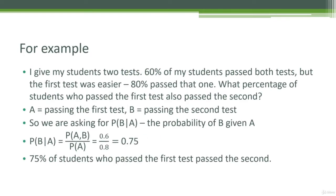Let's look at a real example. Say I give my students two tests and overall 60% of my students passed both tests. If we call the tests A and B, P(A,B) would be 60%. However, the first test was easier — 80% of my students passed that one. So if B is the second test and A is the first test, P(A) would be 80%.